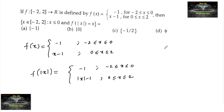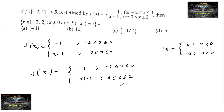Since, as per the definition of |x|: |x| = x when x ≥ 0, and |x| = -x when x < 0.